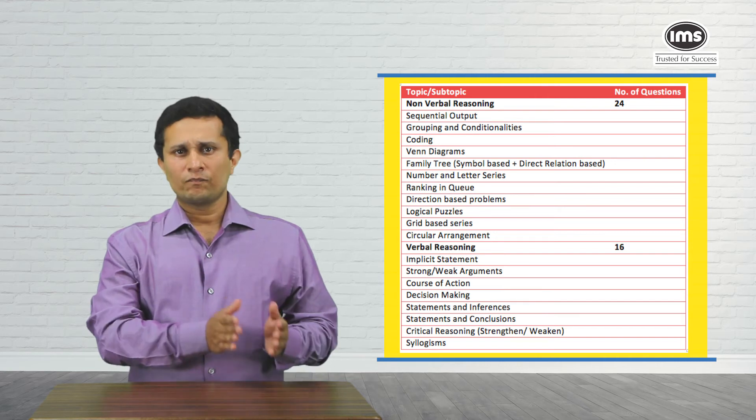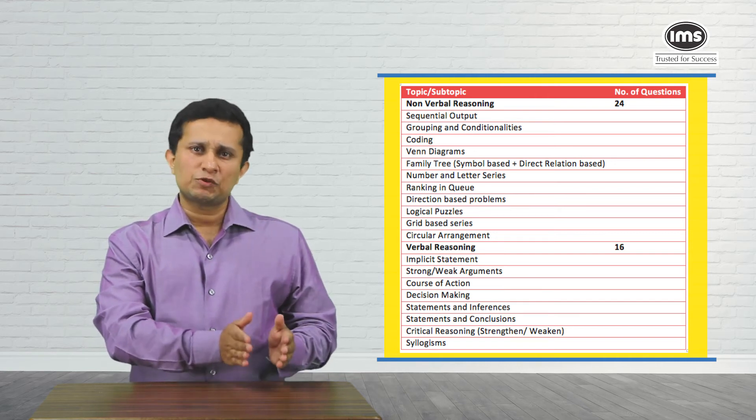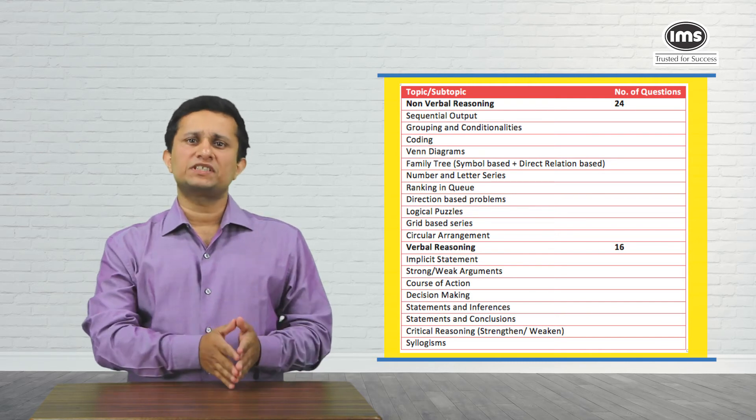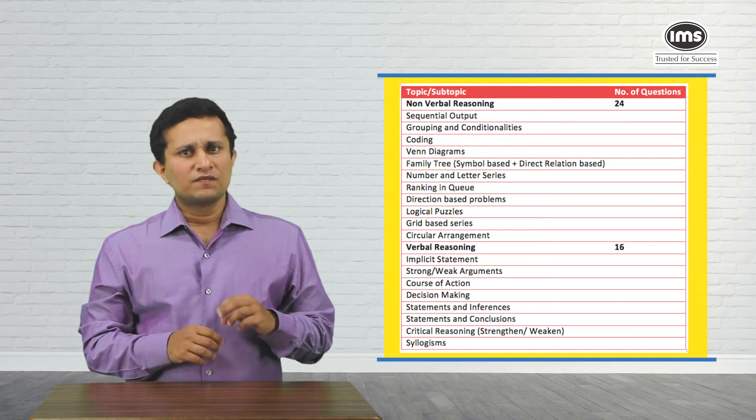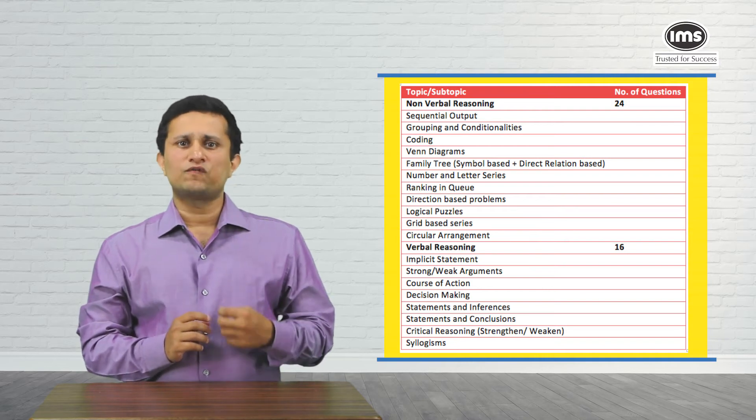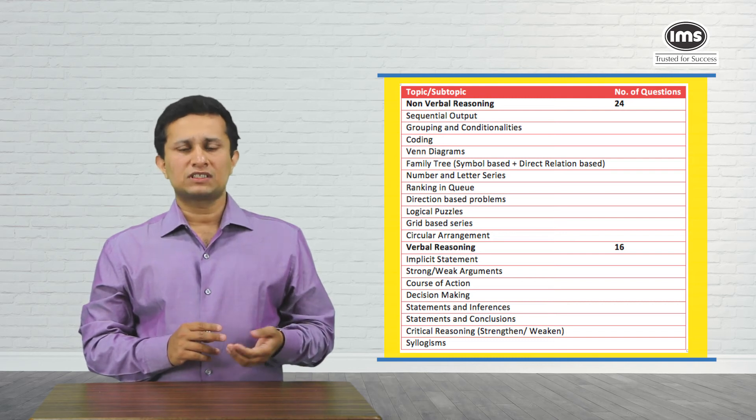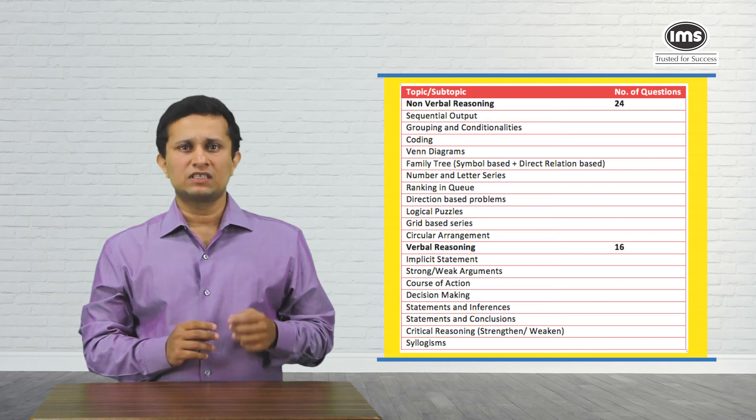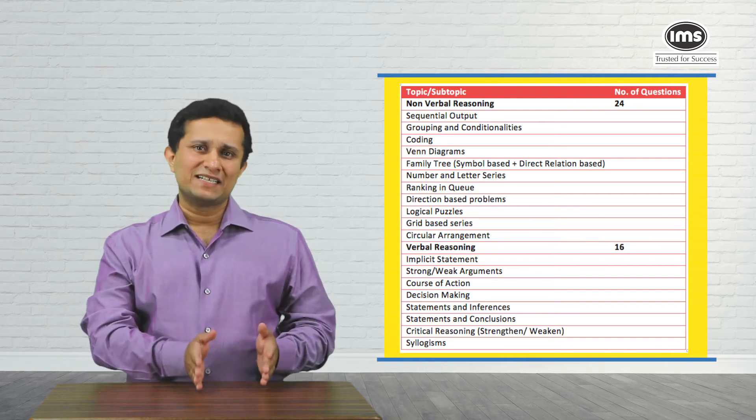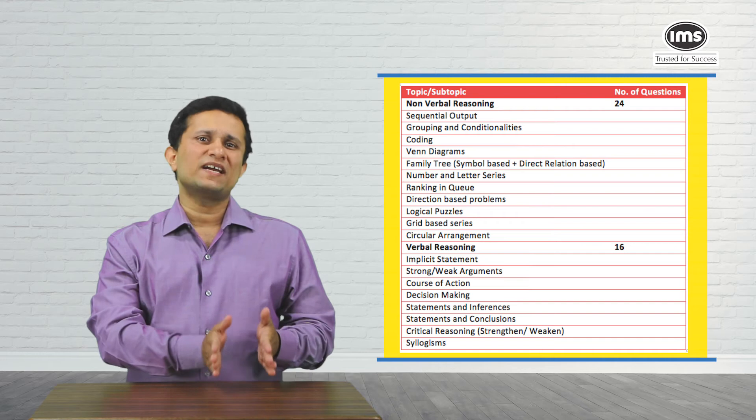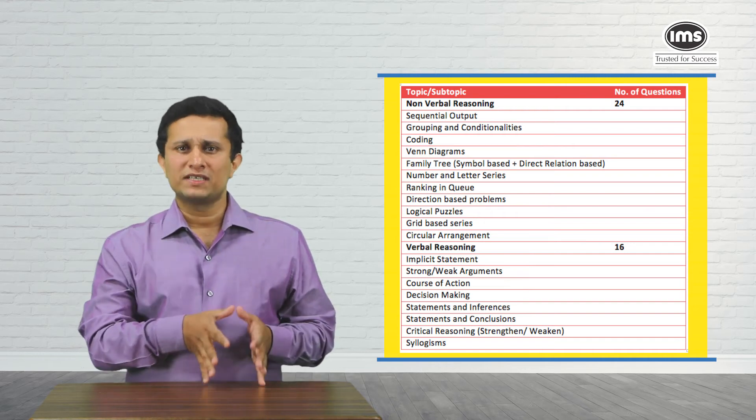Coming to verbal reasoning. In verbal reasoning, again, you had the common question types but the quantity or the number of questions increased. There were questions on courses of action where you had a passage with three or four courses of action. You had statements and conclusions, implicit statements, statements and inferences, strong weak arguments, a typical NMAT question type that is decision making which is more of HR based decision making, and then you had standard syllogism based questions.